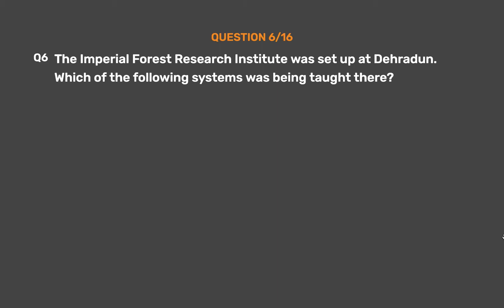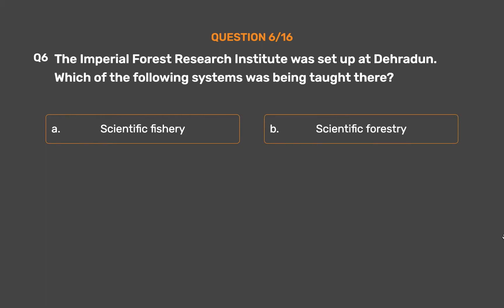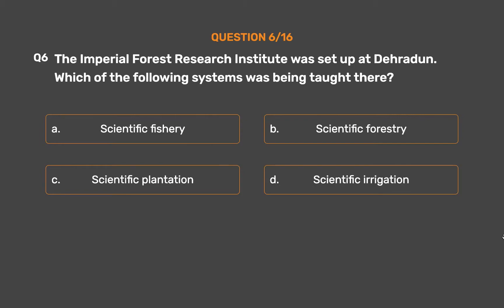Which of the following systems was being taught there? Option A: Scientific fishery. Option B: Scientific forestry. Option C: Scientific plantation. Option D: Scientific irrigation.